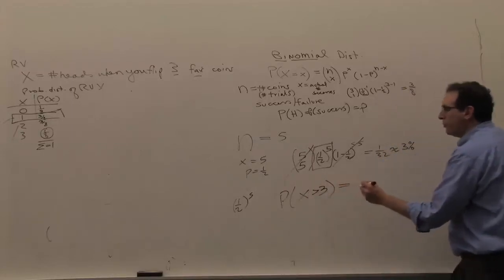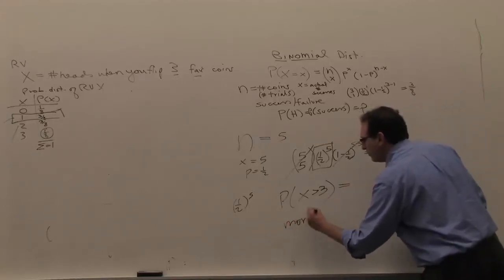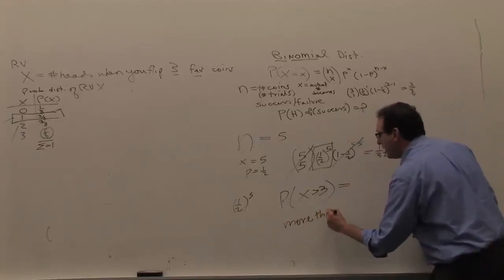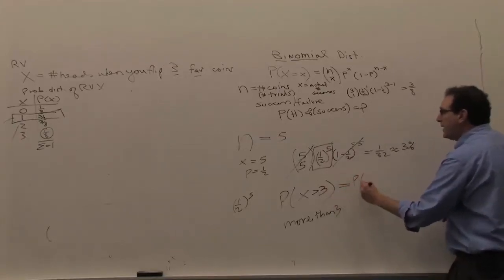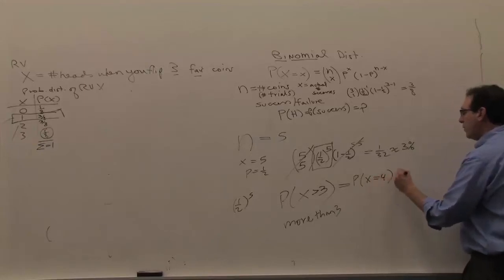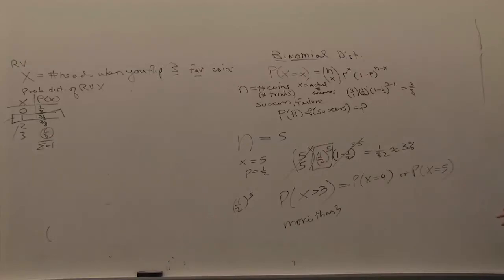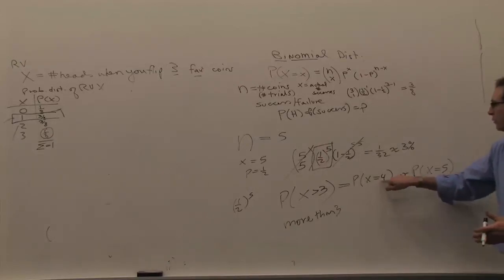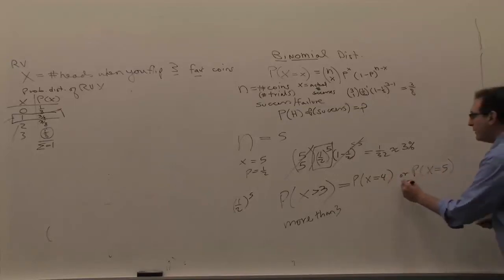When it says more than three, mathematically that really boils down to getting exactly four or getting exactly five. So essentially what you've got to do is apply the binomial distribution twice — once for four and once for five. The five we did already. How would you get the four? And then, of course, you add them together.